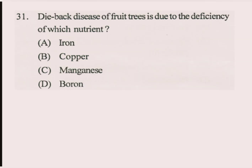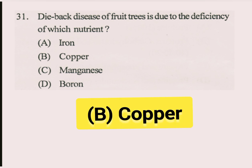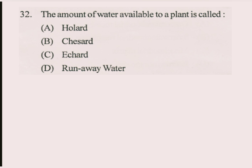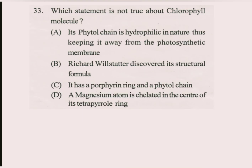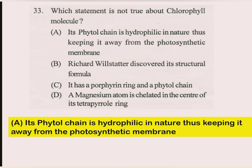Question number 31. Die-back disease of fruit trees is due to the deficiency of which nutrient? The answer is D part: copper. Question number 32. The amount of water available to a plant is called Holard. Question number 33. Which statement is not true about the chlorophyll molecule? The answer is D part: its phytol chain is hydrophilic in nature, thus keeping it away from photosynthetic membrane — which is wrong.